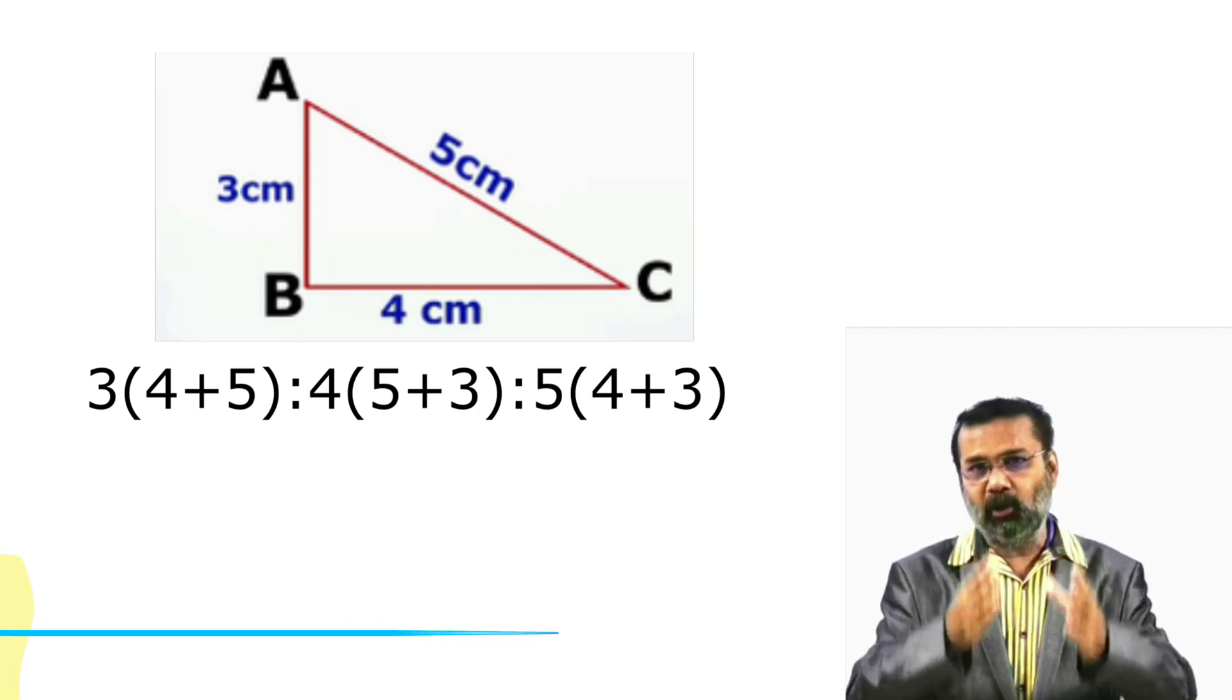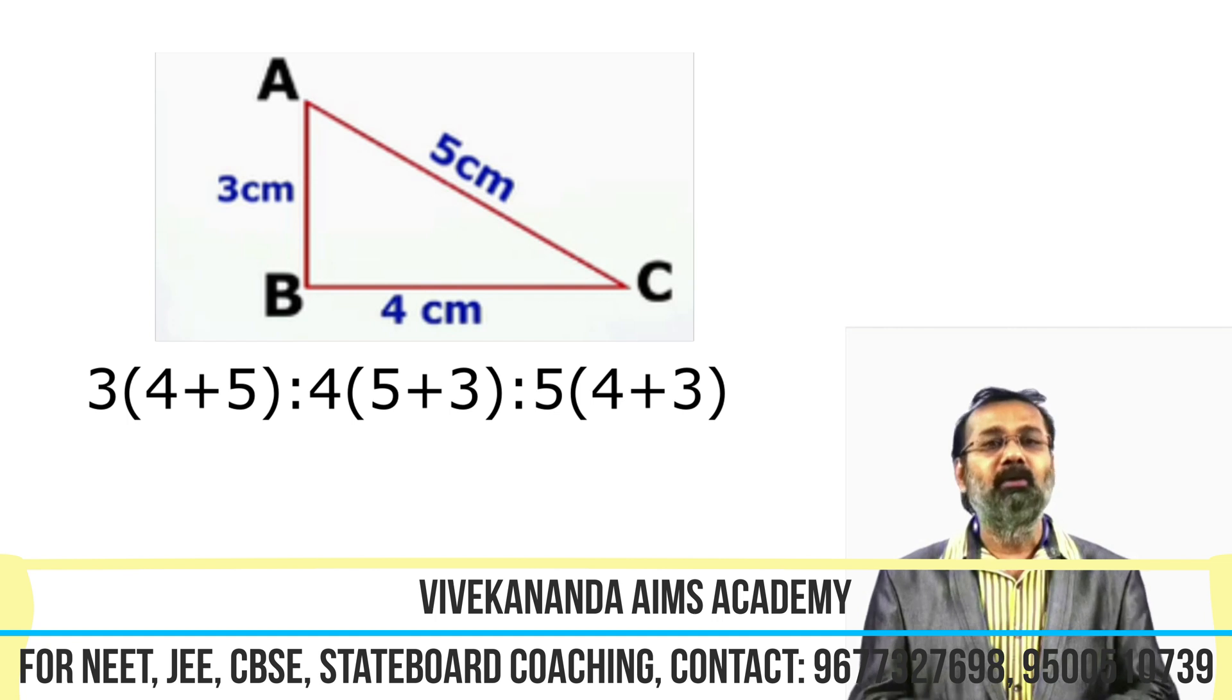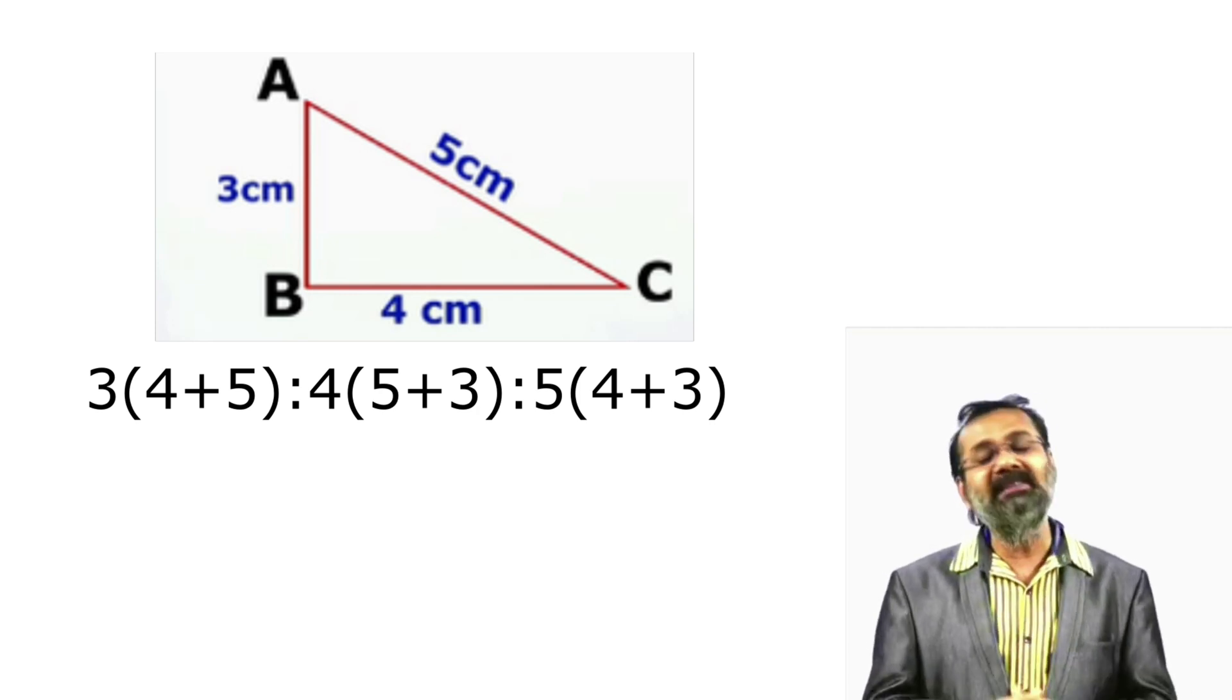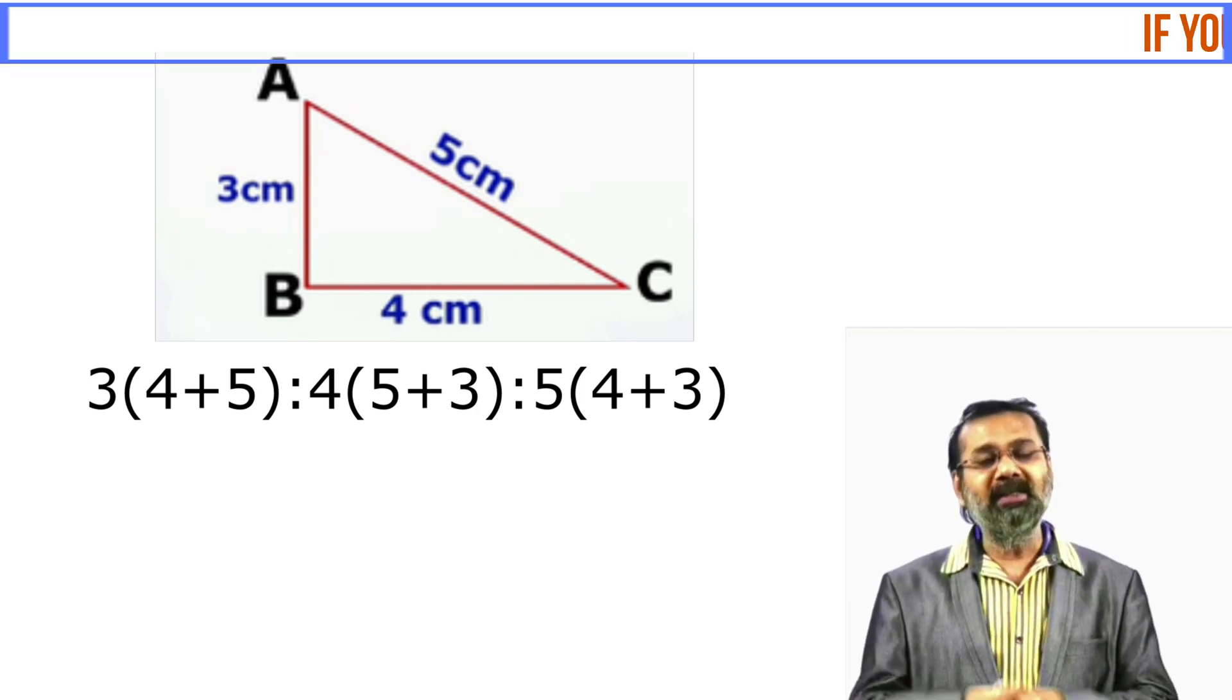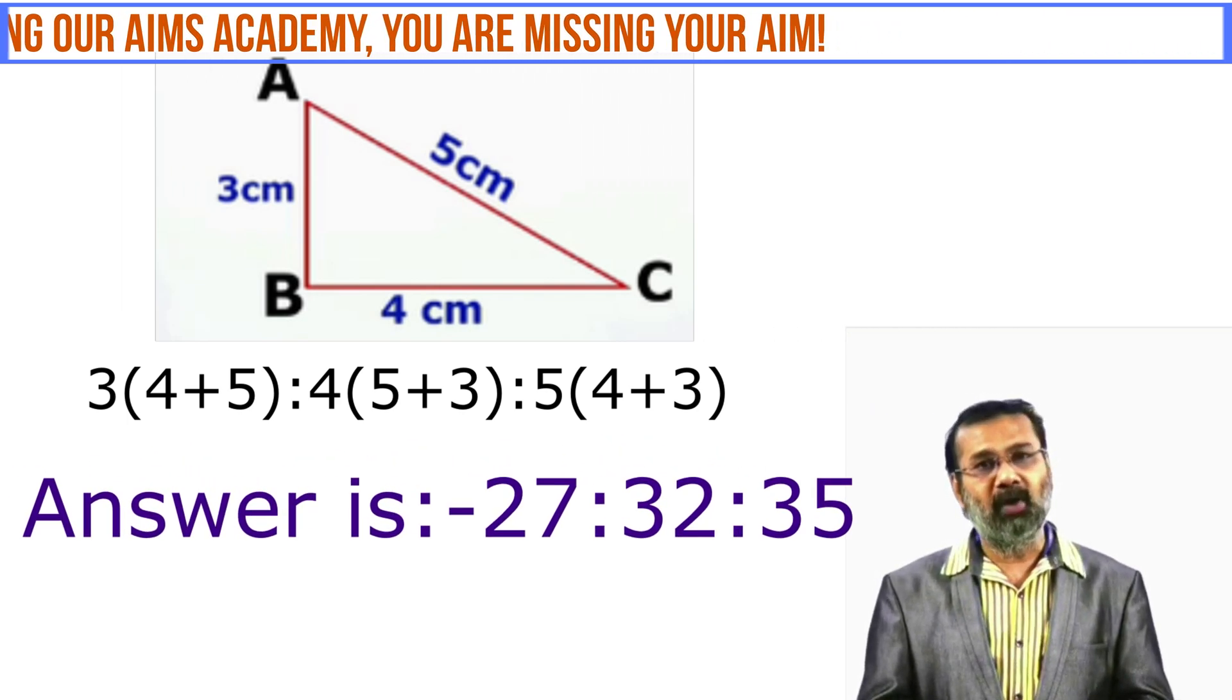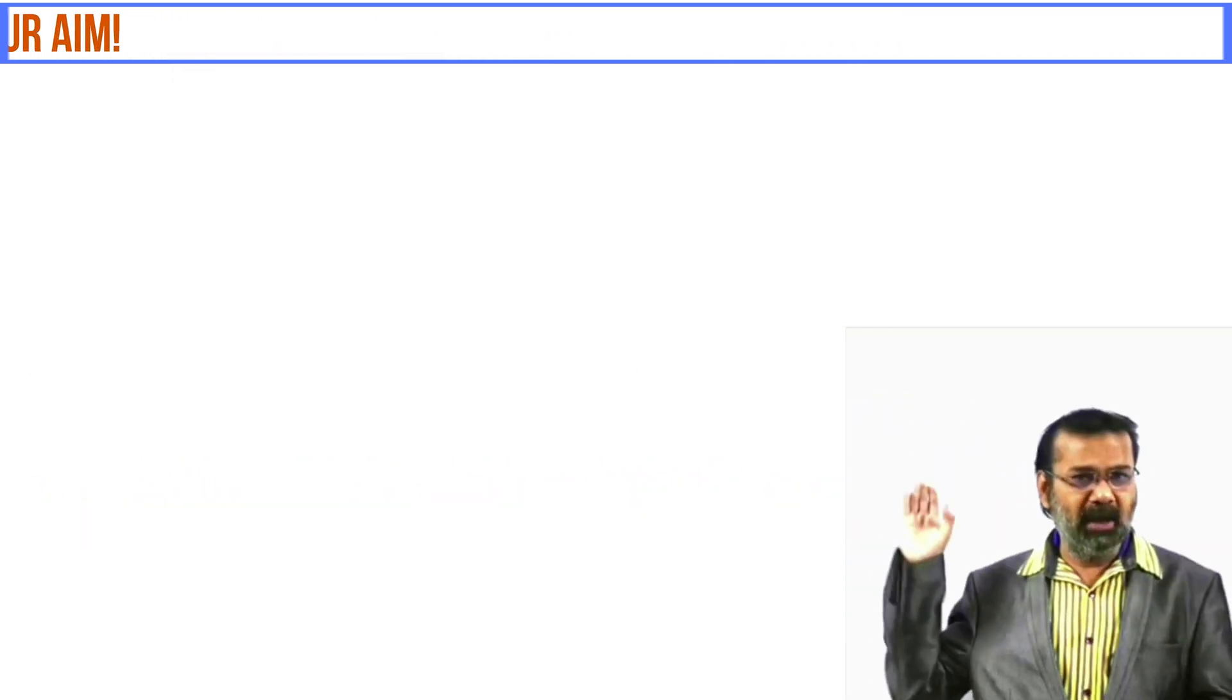So, 4 into 5 plus 3 is to, what is the last number? Exactly, you are right. It is 5 into the next two numbers 3 plus 4. So, if you add it and multiply, you will get the answer like this. What is the answer now? It is 27 is to 32 is to 35.